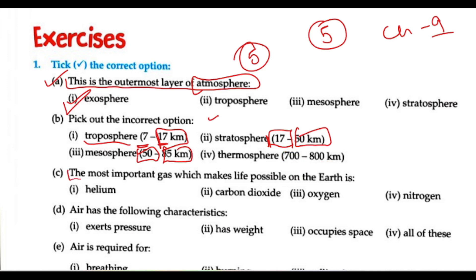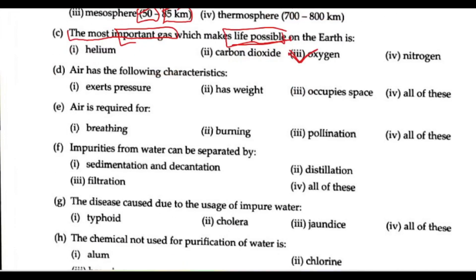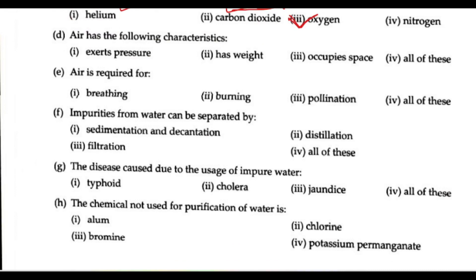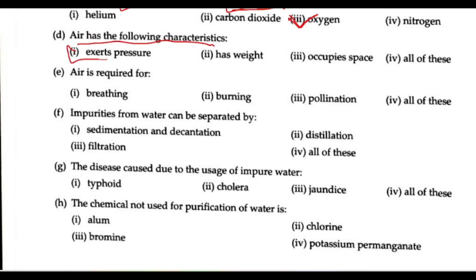Next, we learn that the most important gas for which life is possible is oxygen. We know that we breathe oxygen and fire also requires oxygen. So life is possible due to oxygen.